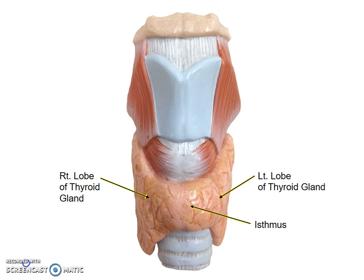This is the anterior view, so you can see the right and left lobe of the thyroid gland. You can also see that the thyroid gland looks like a butterfly-shaped organ. I want you to focus your attention on the lobes — the wings of the thyroid gland. Now we're going to flip this structure around to the posterior view, where you'll see the back part of the right and left lobes, or the wings of the thyroid gland.